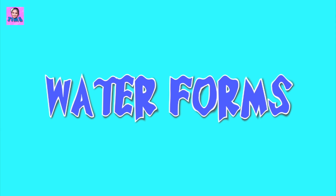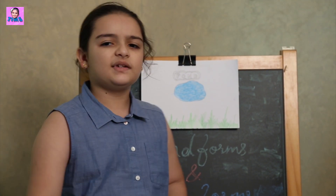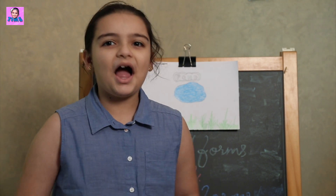Now moving on is waterforms. Like I spoke about some of the landforms, now I'm going to talk about a few waterforms. The first one is a pond. A pond is a small body of water surrounded by land. Some people can also sometimes go and do fishing or boating — I've done one.